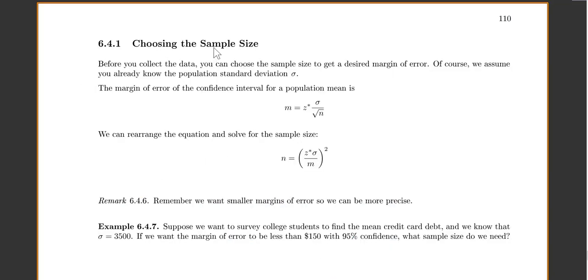Sometimes we'll want to choose our sample size before we actually take our sample. Suppose before we collect our sample, we can choose our sample size to get a desired margin of error. Of course, we're assuming that you already know the population standard deviation sigma, so we can use it in our formulas. The margin of error for our confidence interval for a population mean mu was the z star times sigma over square root of n. That was the part we were adding or subtracting every time we found a confidence interval.